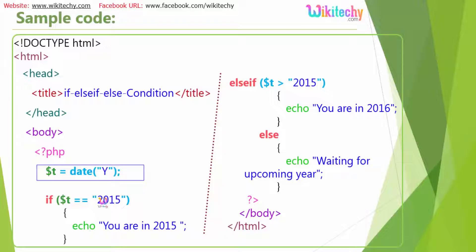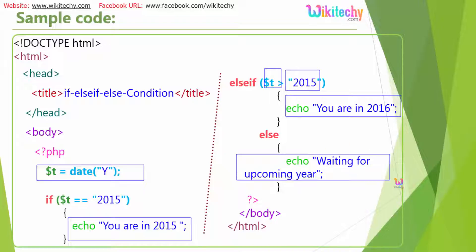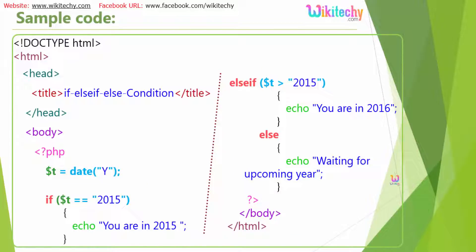If the value of t is equal to 2015, we echo 'You are in 2015.' Else if t is greater than 2015, we print 'It is 2016.' Otherwise, we print 'Waiting for upcoming years.' This is the complete if-else if-else condition code.